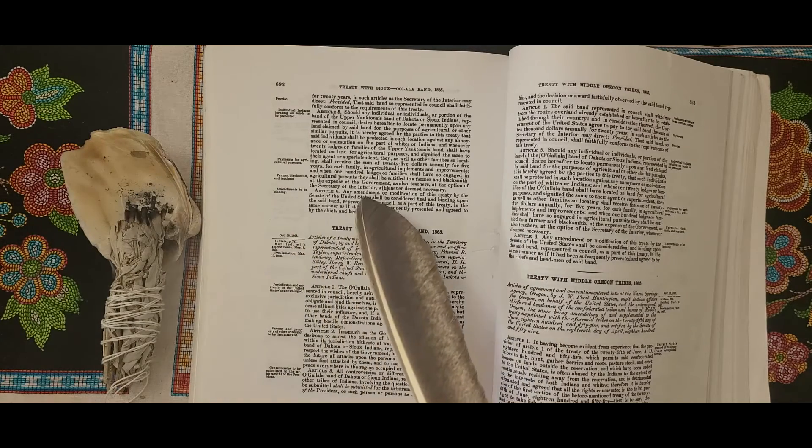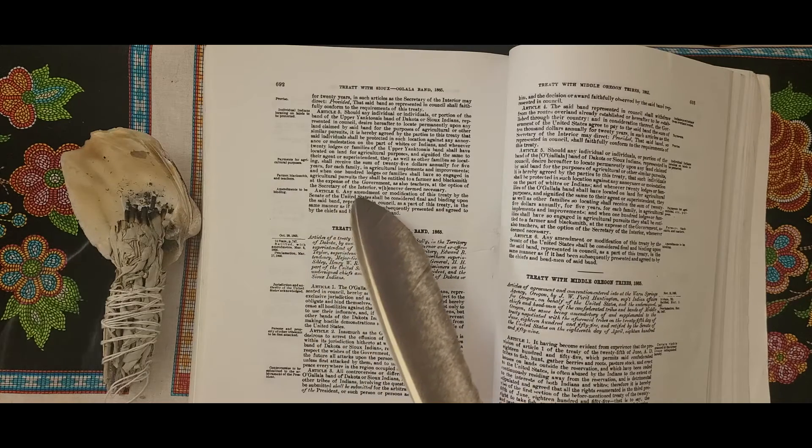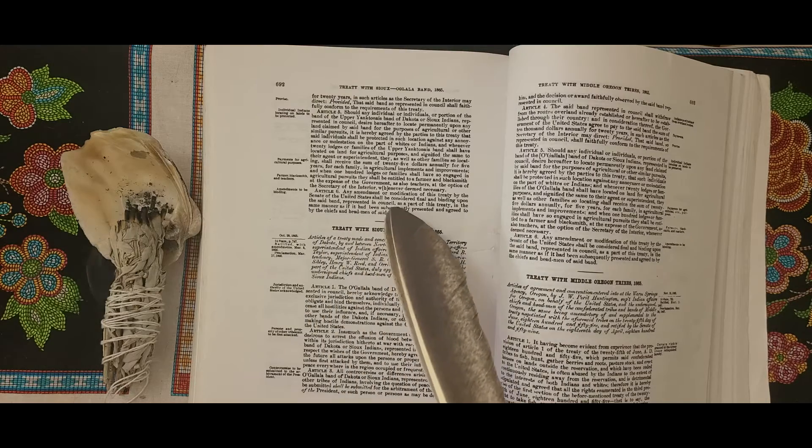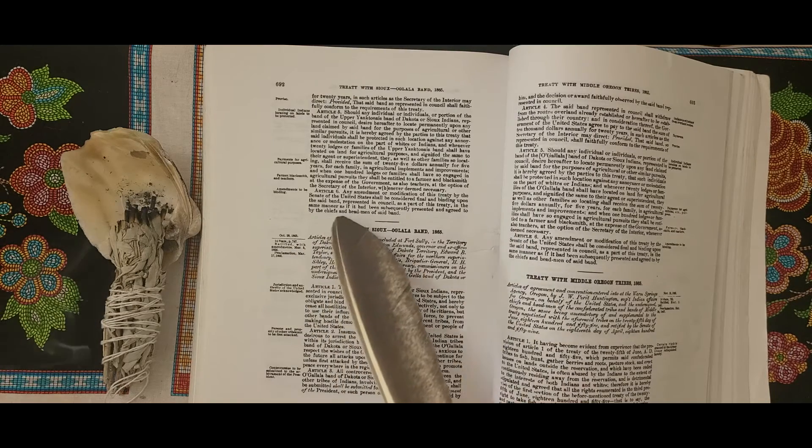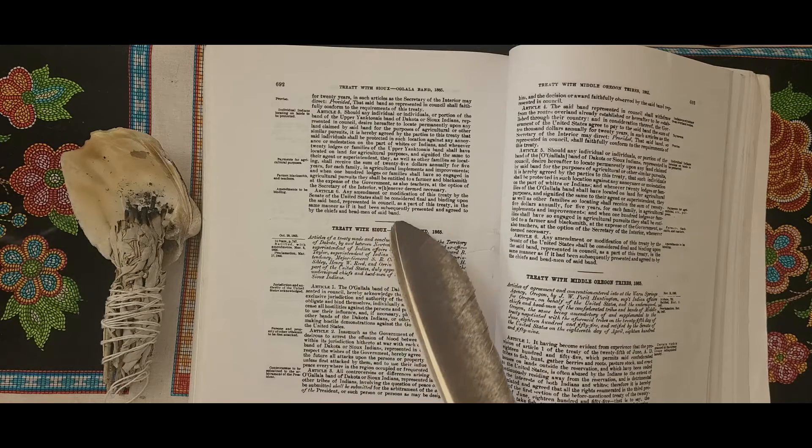Article 6: Any amendment or modification of this treaty by the Senate of the United States shall be considered final and binding upon the said band represented in council as a part of this treaty, in the same manner as if it had been subsequently presented and agreed to by the chiefs and headmen of said band.